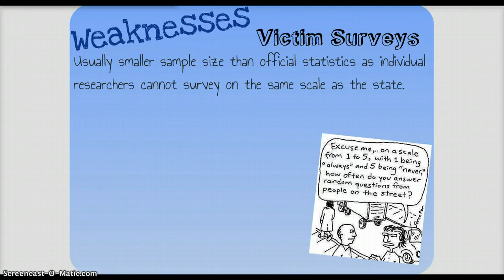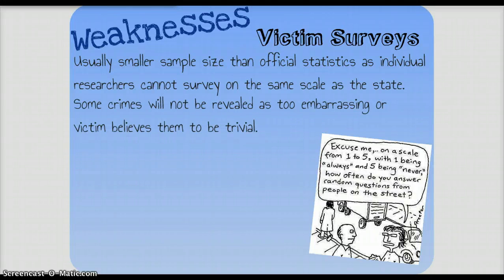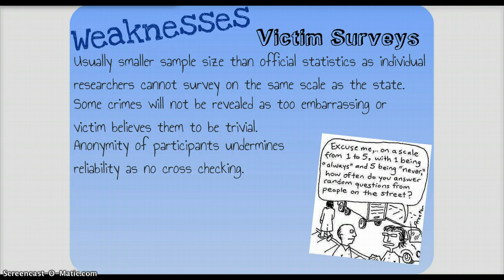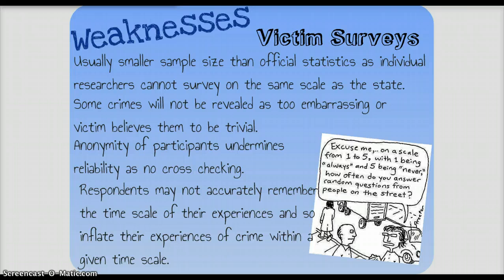Weaknesses of victim surveys: they usually work with a smaller sample size than official statistics — individual researchers can't survey on the same scale as the state. Some crimes will not be revealed; despite the point about dark figures, some crimes are too embarrassing to talk about, or the victim might consider them trivial. Anonymity of participants stops us being able to cross-check for reliability — a respondent might report horrendous crimes due to their psychological makeup. And respondents might not accurately remember the time scale of their experiences, inflating the experience of crime without a given time scale.